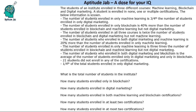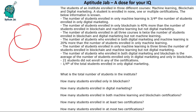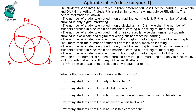Welcome to Aptitude Lab. This problem is based on Venn diagrams. It says that the students of an institute enrolled in three different courses: Machine Learning, Blockchain, and Digital Marketing. We'll create three circles, as some students can enroll in multiple courses as well. Let's mark these as Machine Learning, Blockchain, and Digital Marketing.